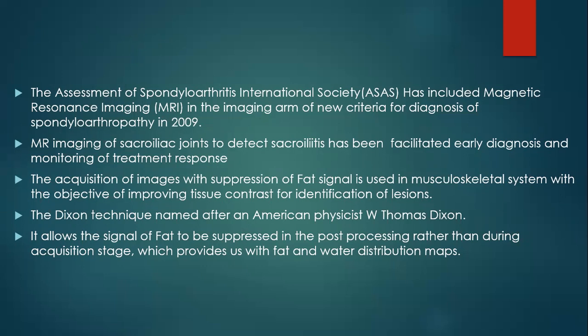Fat suppression is used most commonly in MSK imaging and abdomen or pelvis imaging, and the Dixon technique is one of them, named after the physicist W. Thomas Dixon. It allows the signal of fat to be suppressed in post-processing, and we get four images. It works on chemical shift imaging and provides us with fat and water distribution maps.